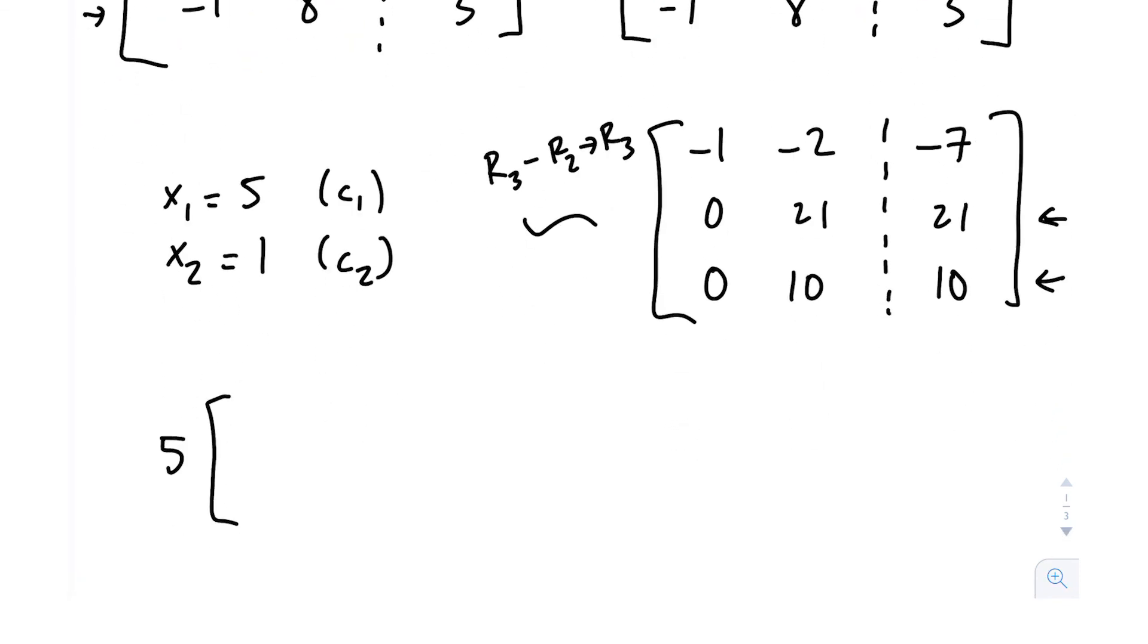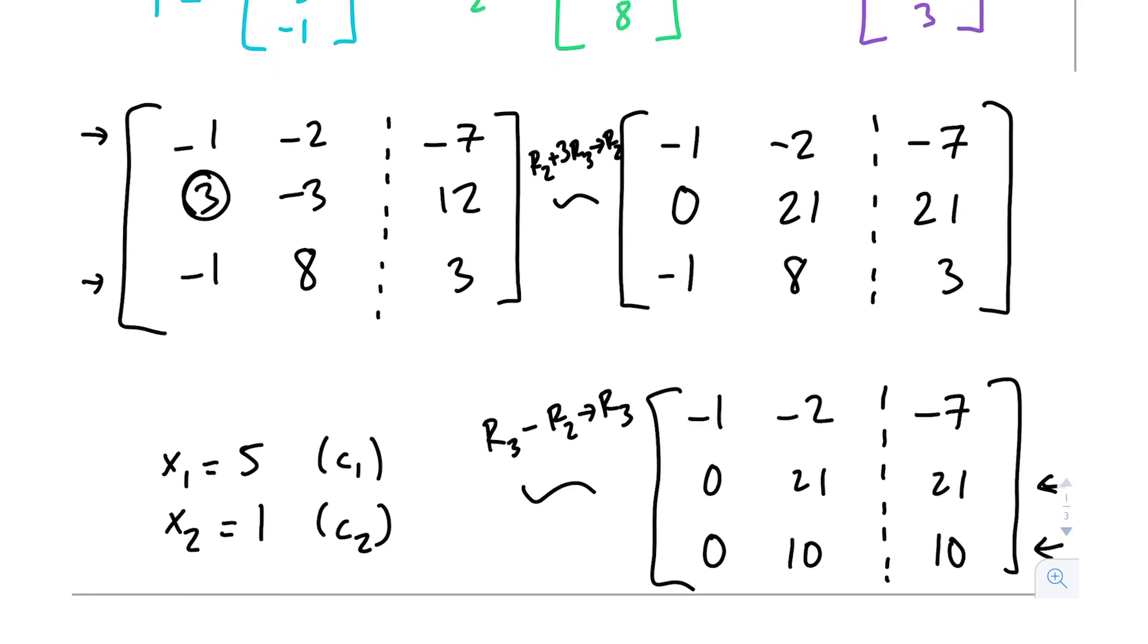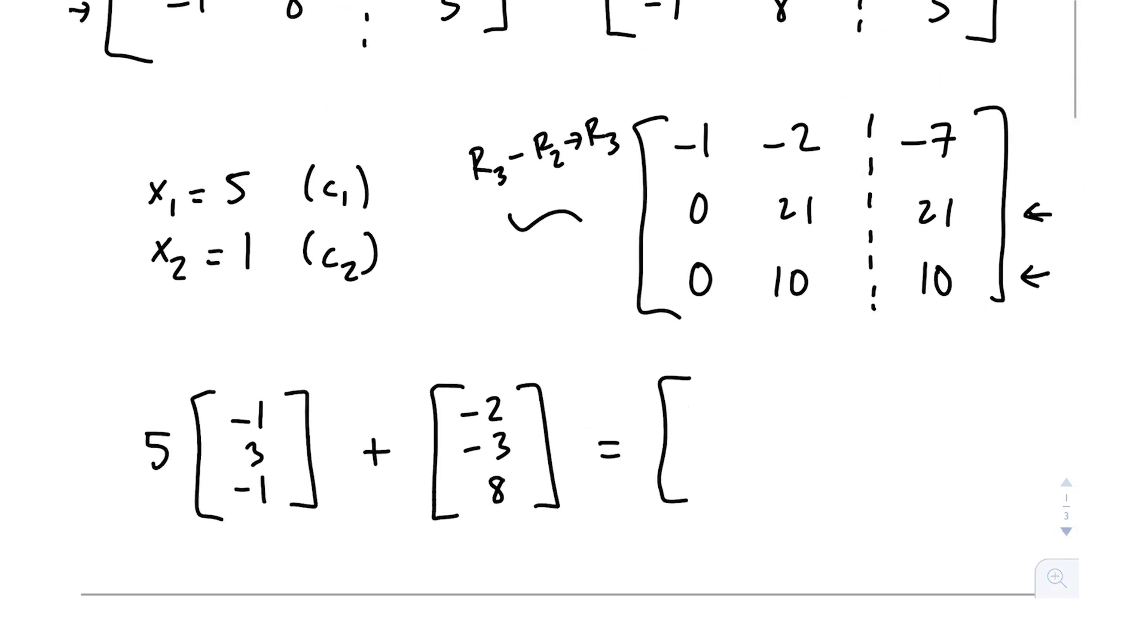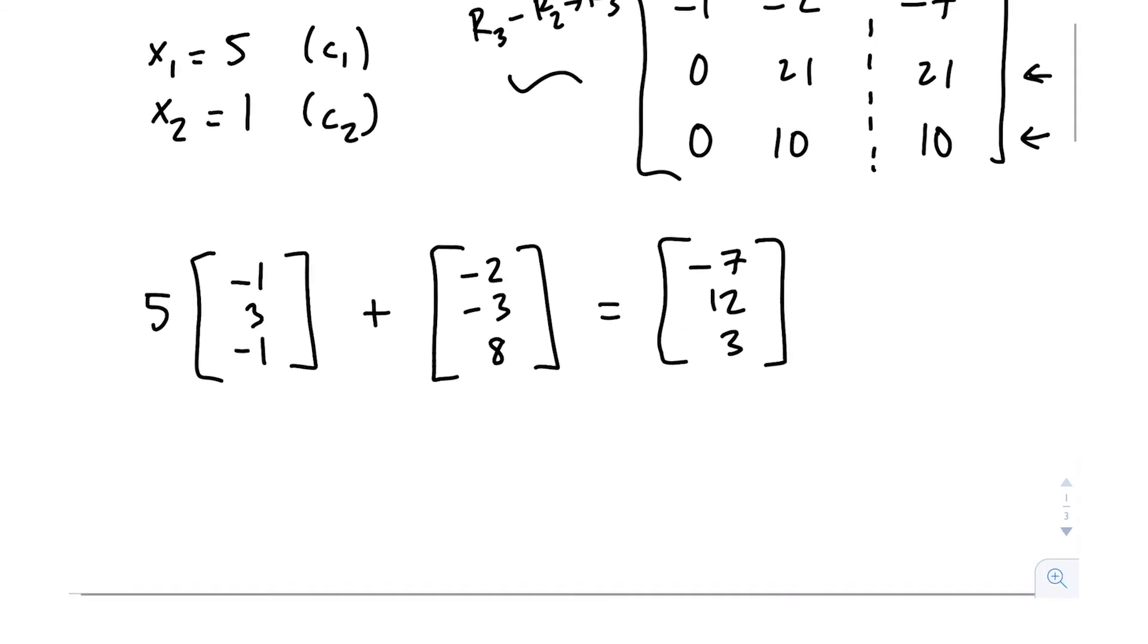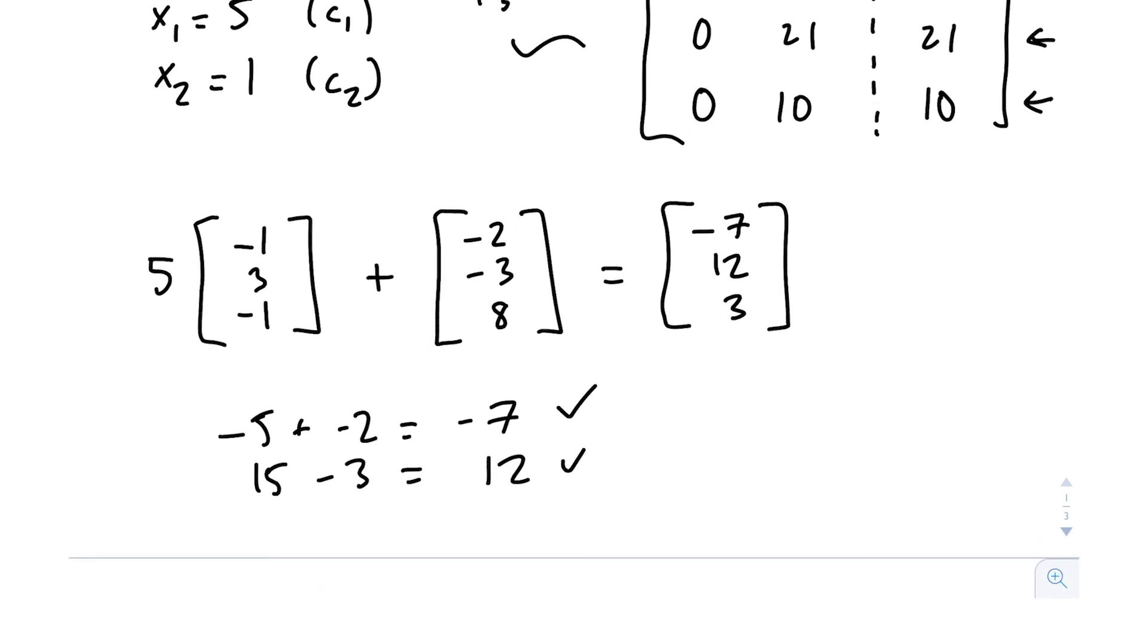So negative 1, 3, negative 1. And then we add 1 times negative 2, negative 3, 8. And this should equal negative 7, 12, 3. And we can really double check those real quick. So negative 5 plus negative 2 equals negative 7, good. 15 minus 3 equals 12, good. Negative 5 plus 8 equals 3, good. So here is what our actual final solution would be. We've expressed it as a linear combination.